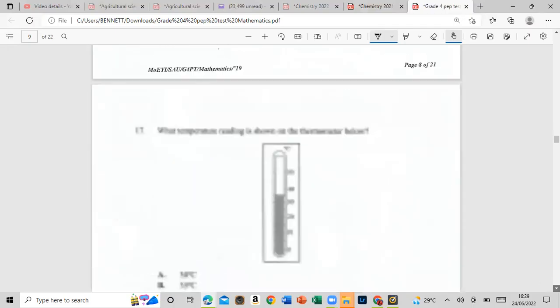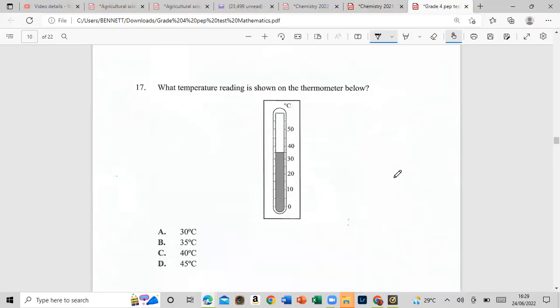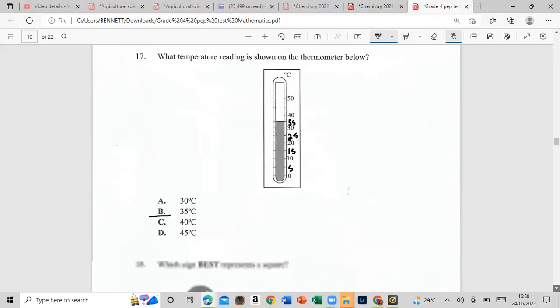What temperature reading is shown on the thermometer below? Let us see how it's going. We see from zero, then 10. So basically we are going up by five: zero, five, ten, fifteen, twenty, twenty-five, thirty, thirty-five. So we're going up by five. So that would be 35 degrees. It's halfway between 30 and 40.